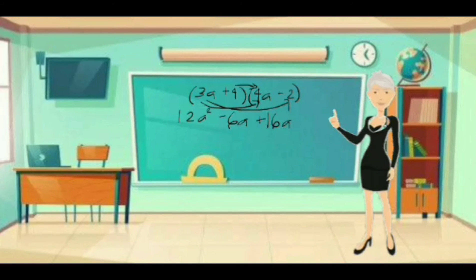We must always combine like terms. When we combine negative 6a and 16a, it will result in positive 10a. The product when we multiply the binomials 3a plus 4 times 4a minus 2 is 12a squared plus 10a minus 8.